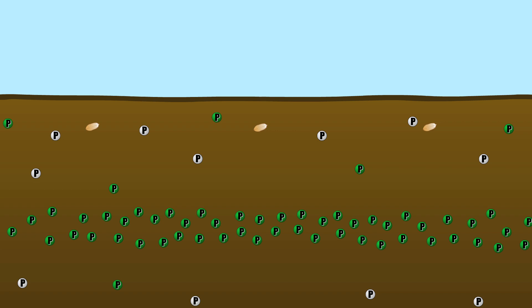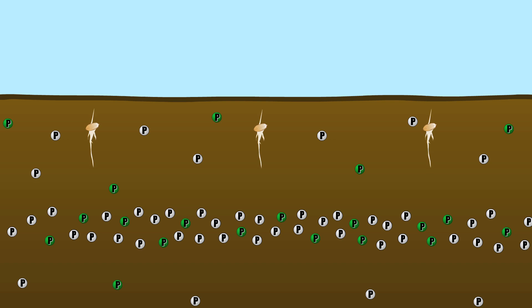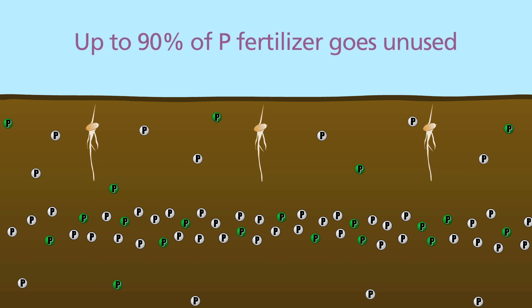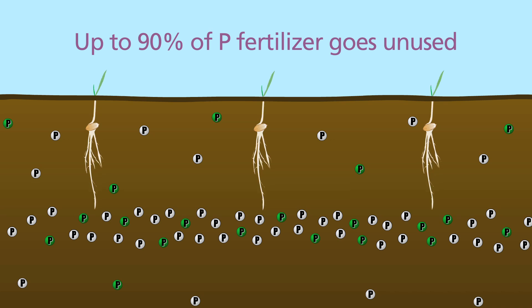However, due to soil chemistry, most fertilizer phosphate quickly converts to unavailable forms. By the time the roots reach the fertilizer band, much of the phosphate is unavailable. In fact, up to 90% of applied phosphate fertilizer goes unused in the year of application.